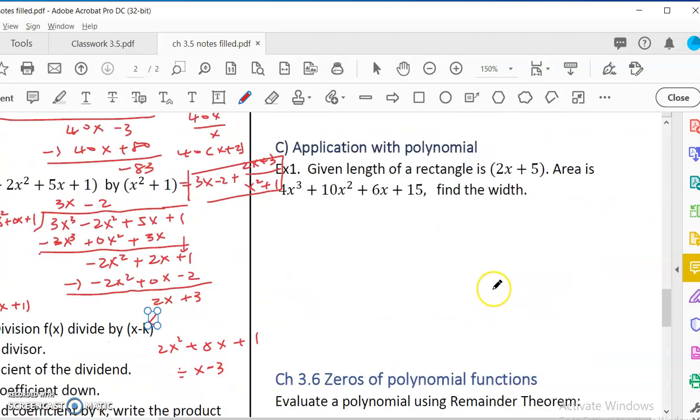So what can we use this synthetic division for, or dividing for? We can use it to solve applications. The easiest one, I have a question here. Someone gives us the length of a rectangle in terms of x and the area in terms of x also. We have to find the width. Of course, we know that area is length times width. So if I know area and I know length, w would equal to area divided by L. So I will do 4x³ + 10x² + 6x + 15 divided by L, which is 2x + 5.